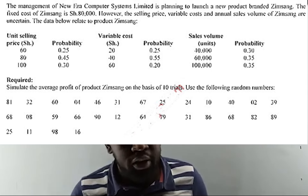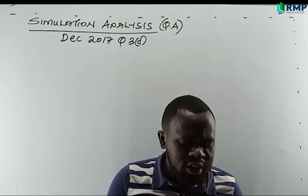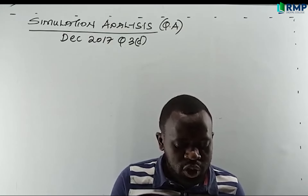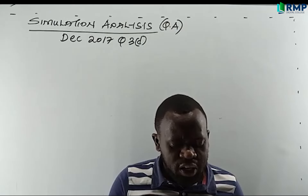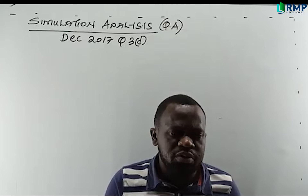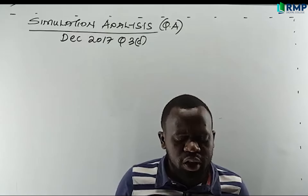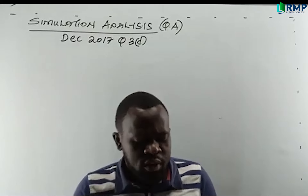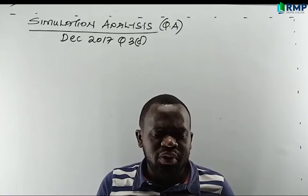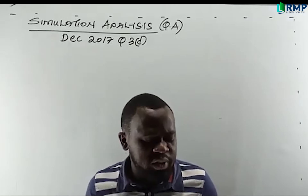The first variable is unit selling price, with events 60, 80, and 100, each having given probabilities. The second variable is variable cost, which can be 20, 40, or 60 shillings, each with attached probabilities. The third variable is sales volume: 40,000, 60,000, or 100,000 units, again with probabilities attached to each event. A variable is identified wherever probabilities or chances are given for its events.